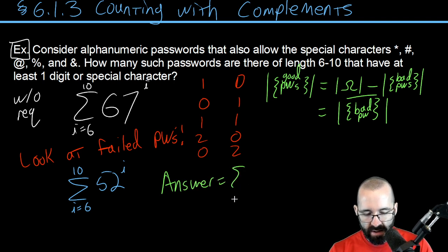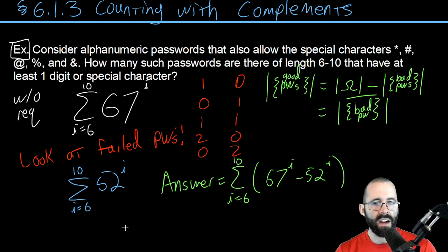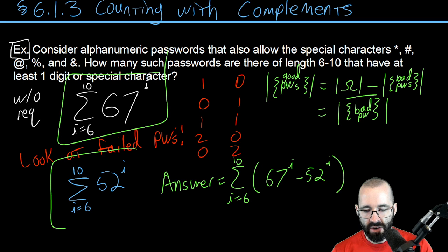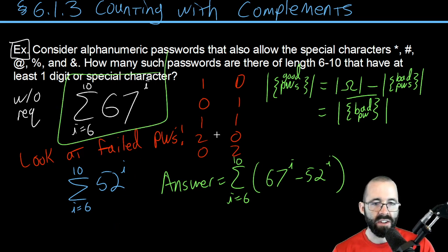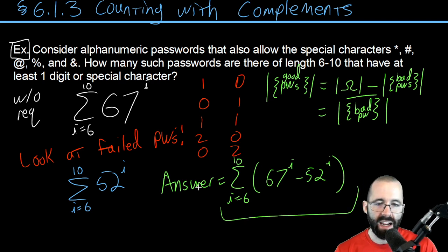Just going to be the sum from i equals 6 to 10 of 67 to the i minus 52 to the i. Or you could do these individually—be very careful when you're combining these, you're summing these and you're subtracting these because of the distributive property. You can simplify it like this. You can do it by hand—I don't really care in this chapter about this notation, it's just me doing shorthand because I want to write less.